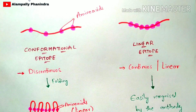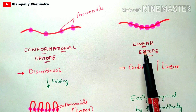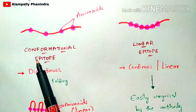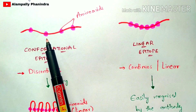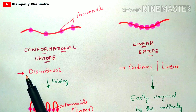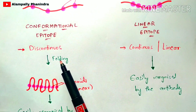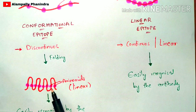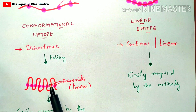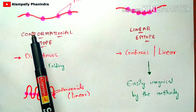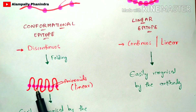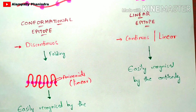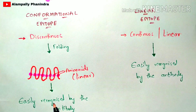One more key difference: linear epitopes consist of continuous amino acids and can be easily recognized by the antibody directly. But in the case of conformational epitopes, the amino acid sequence cannot be recognized by the antibody directly — one more step occurs, which is folding. The conformational epitope undergoes folding, and once folding occurs, all of the discontinuous amino acids come together and become linear, so the antibody — that is, the paratope region — can then recognize them.